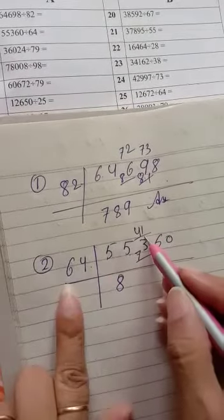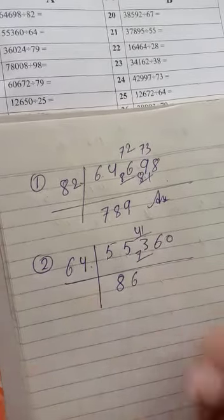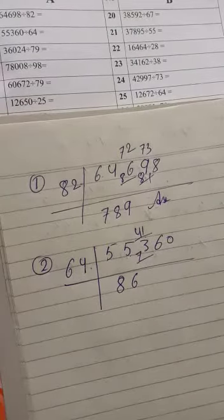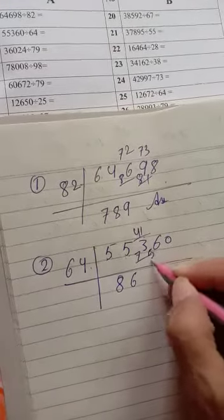Then 6 times 5 is 30, 6 times 6 is 36. 41 minus 36 is 5. Then this one is 5.